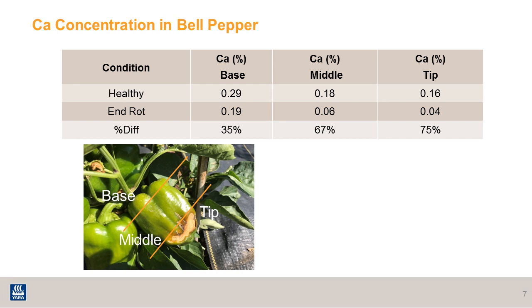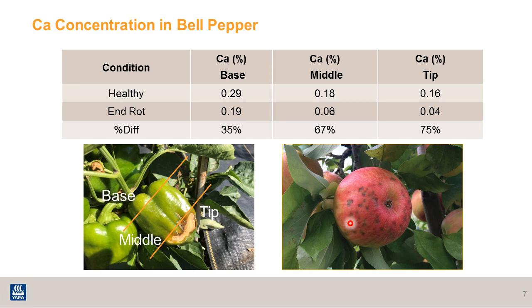Here's a calcium concentration study in bell pepper. As many of you who grow bell pepper may know, this blossom end rot is very similar to the one found on tomatoes. At the tip of the peppers, calcium concentration is very low — about 75% lower than the tip of healthy fruit. Similarly in apples, the bitter pit disorder tends to happen on the lower half of the fruit, where calcium deficiency occurs.